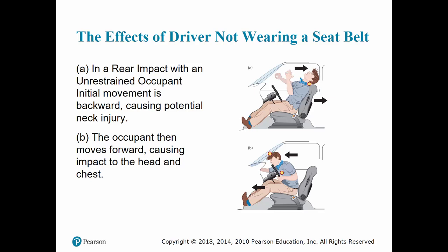If there is a headrest properly positioned and seat belts are worn, injury is now minimized. However, if the vehicle does not have headrests or they are improperly positioned, the neck is then hyperextended and the anterior spinal ligaments are often stretched or torn — this is often referred to as a whiplash injury. As the inertia continues to catch up to the vehicle, the patient is then thrown forward into the dashboard.